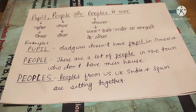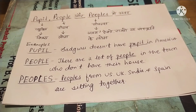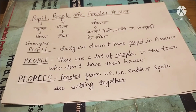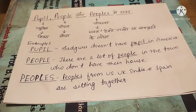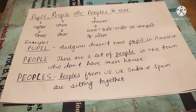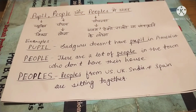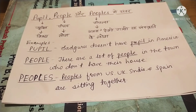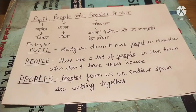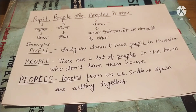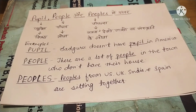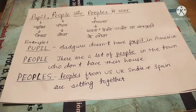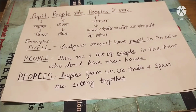Toh aapko aaj ka lesson samajh aaya hoga. Pupil matlab shishya, people matlab log, aur peoples matlab alag-alag deshon ya rajyon ki sanskriti ke jo log hote hain, unko bolte hain. Toh teeno words exist karte hain, but teeno ka meaning alag-alag hai, alag-alag sense mein hum log use karte hain. I think aaj ka lesson aapko achhe se samajh aaya hoga.